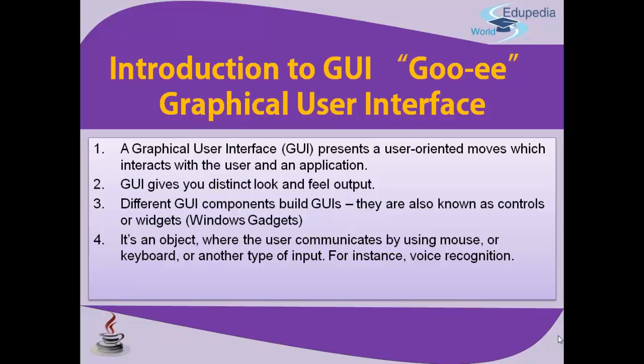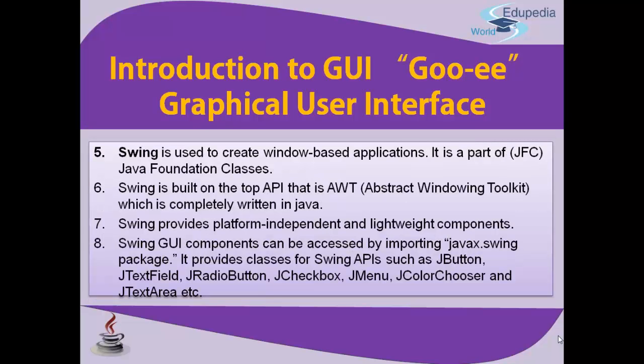We are going to incorporate GUI components with the help of the Swing component library. Swing is used to create window-based applications — they are visible and visual to you. It is a part of JFC, Java Foundation Classes. Swing is built on top of AWT, the Abstract Windowing Toolkit, which is completely written in Java, meaning you have not externally imported this library. Swing provides platform-independent and lightweight components, accessible by importing the javax.swing package.